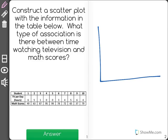Now a scatter plot takes place on a graph, and we have TV per day in hours and math scores. I'm going to put TV per day as my x value and math scores as my y value.